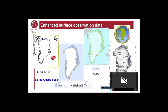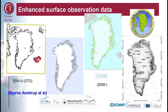For Greenland in particular, we have other actors providing data. On the right-hand side is shown the GCNet data that we have, which has been a great advantage for us. These have been available since the mid-1990s, so it's a great dataset. Both the GCNet and the PROMICE data from GEUS are on the ice sheet, where we only have one synoptic station — on Summit — but otherwise we don't have national weather service synoptic stations there.